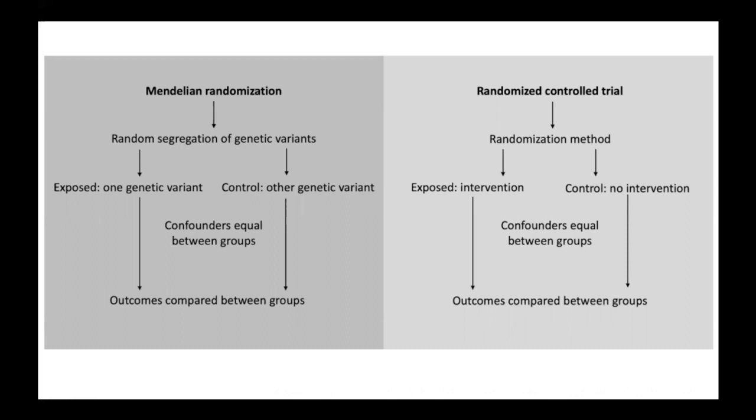Using this genetic information therefore allows us to create groups within observational data of participants who differ for a genetic variant. If this variant is also associated with our exposure of interest, then we can look for outcomes that co-vary with its presence or absence. In MR we look at genetic variation from single nucleotide polymorphisms or SNPs.